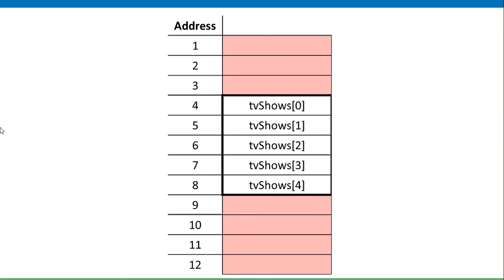Let's look at how an array actually sits in RAM. The RAM is accessed through a single one-dimensional array of addresses, where each address corresponds to a physical location. Our array 'tvShows' has been assigned to addresses four through eight — it occupies that contiguous block of memory.